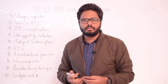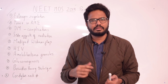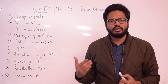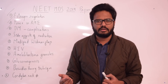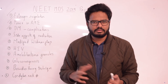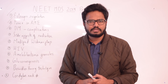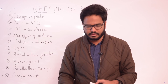Moving on to diabetes mellitus complications — I'll present a table from Davidson which clearly outlines various microvascular and macrovascular complications. Along with that, regarding fungal infections: which are more commonly associated with diabetes mellitus — is it candidiasis or another infection?